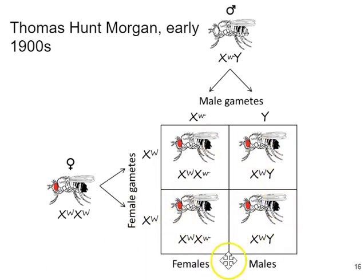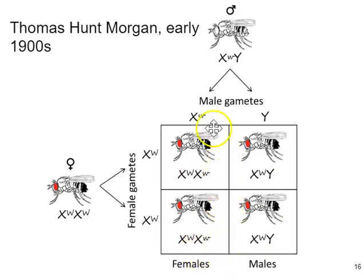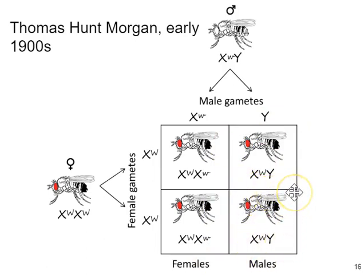Here are the results of the mating — the possible offspring. This is indeed what Morgan observed in his lab. He noticed he saw red-eyed females and red-eyed males. In other words, every single fruit fly in that collection had red eyes. So he did a little more work, not least of which was performing something called a reciprocal cross.